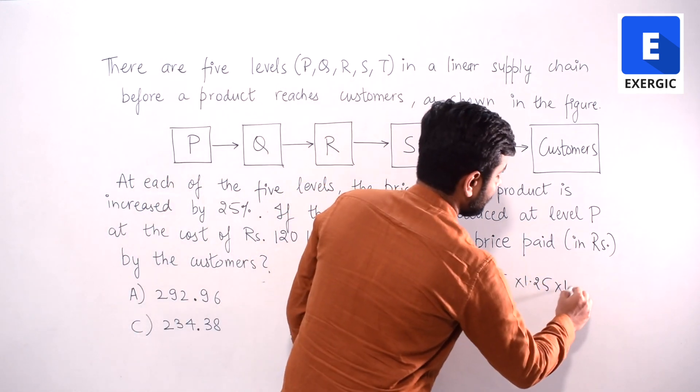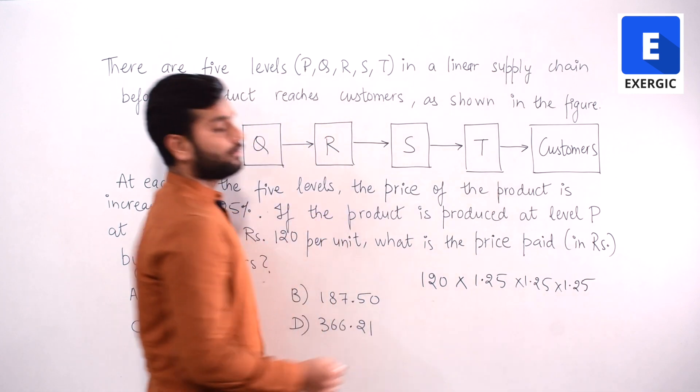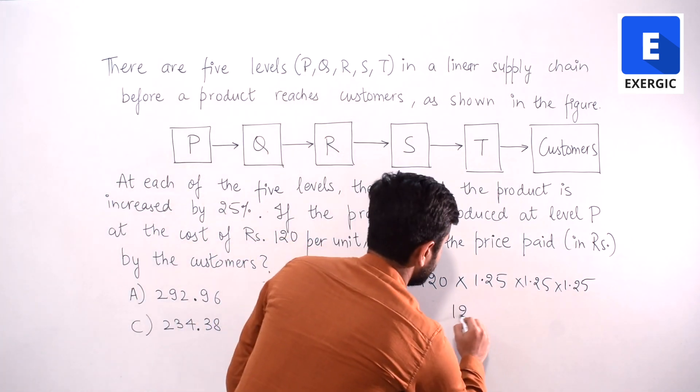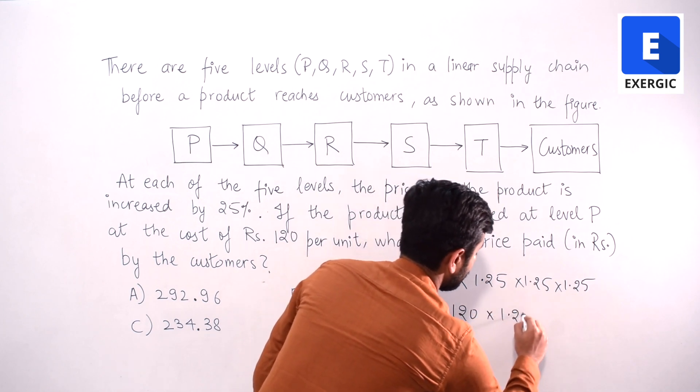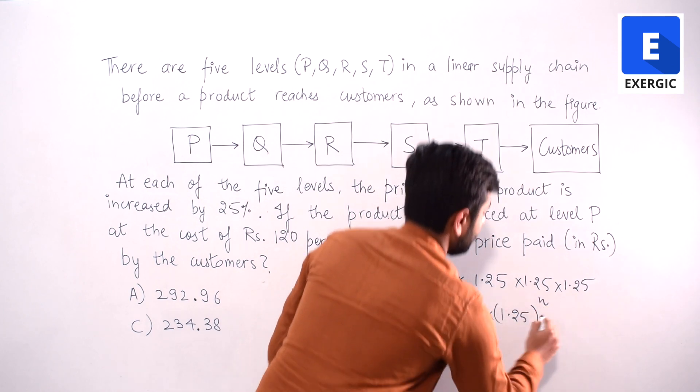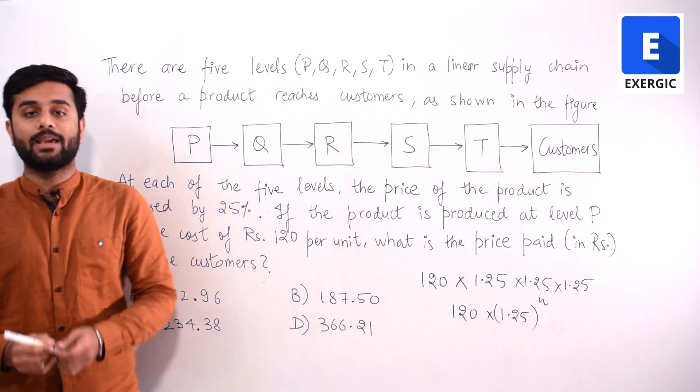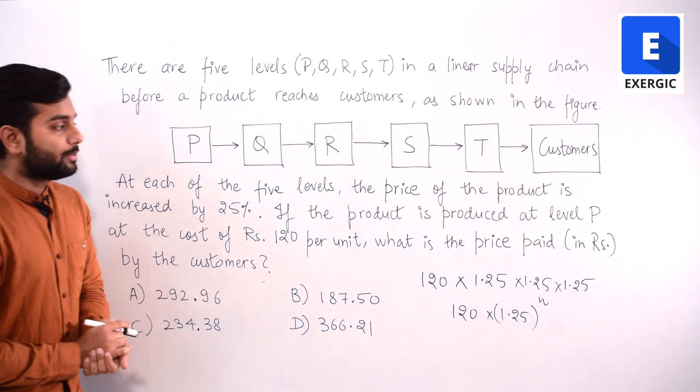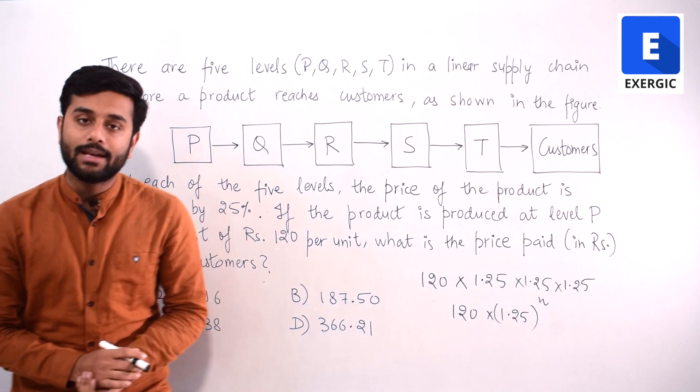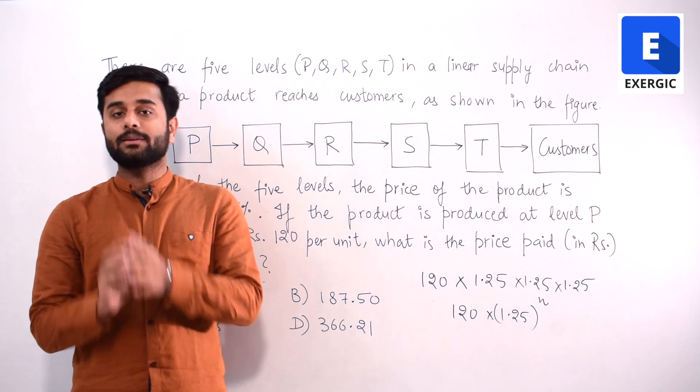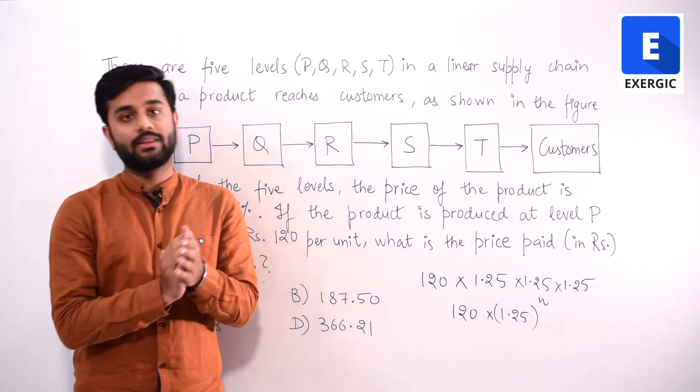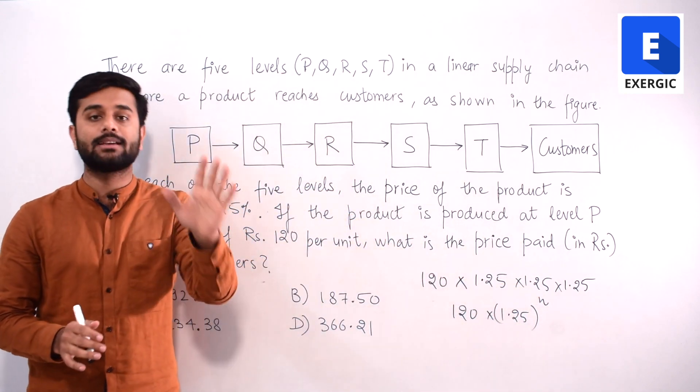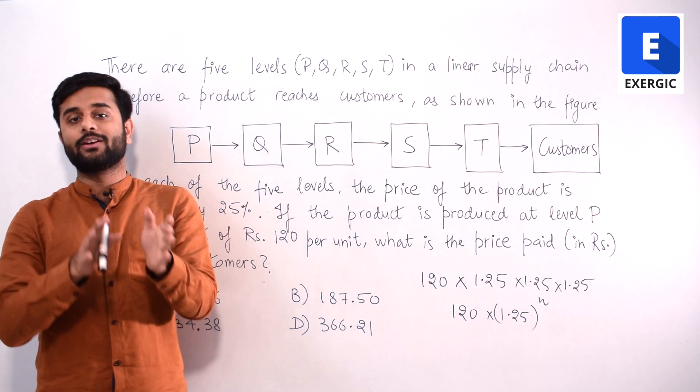If there were 3 levels it will be multiplied by 1.25 once more. What I want to say is you can simply write 120 multiplied by 1.25 to the power N, where N is the number of times the price was increased. This question is about determining how many levels will be there where the price is going to increase. If there are 4 levels N will be 4. If there are 5 levels N will be 5, and that exactly is the debate going on whether N will be 4 or 5.